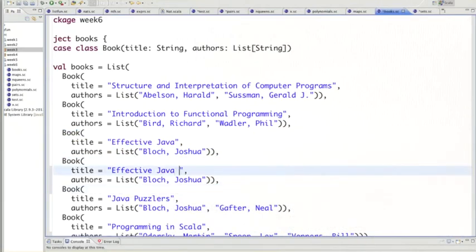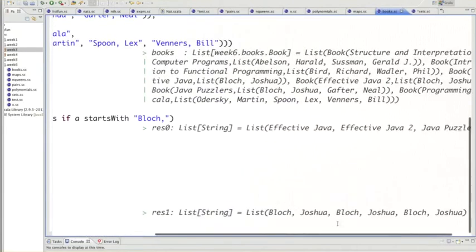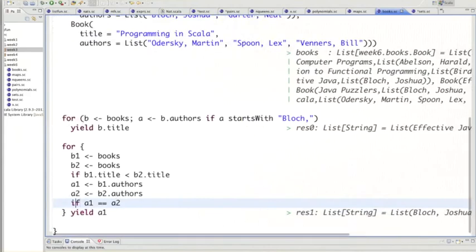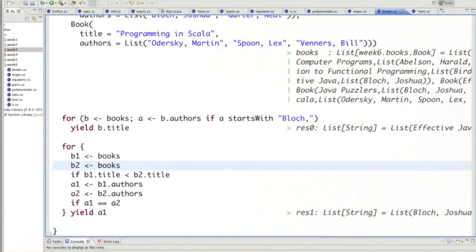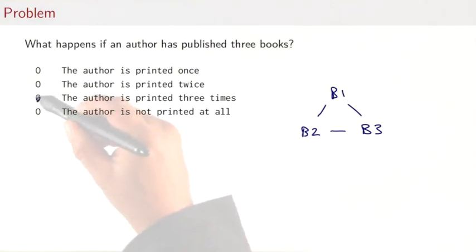Effective Java 2. Let's see what would happen. We see that the same author is printed three times. Why is that? Obviously the problem now is that even with this added condition, we have three possible pairs of books. If you have a book b1, b2, b3 all published by the same author, then you have three possible pairs of two books out of these three. For each of the three possibilities, the same author will be printed, so the author is printed three times.